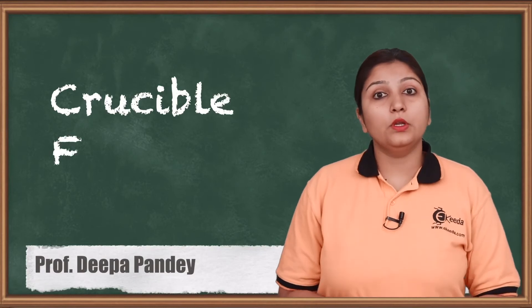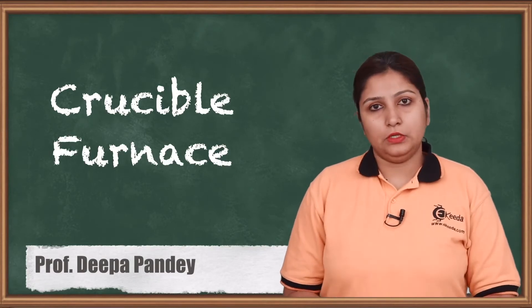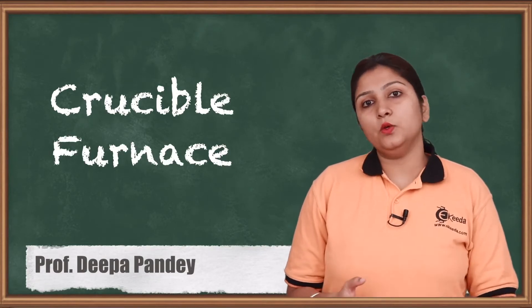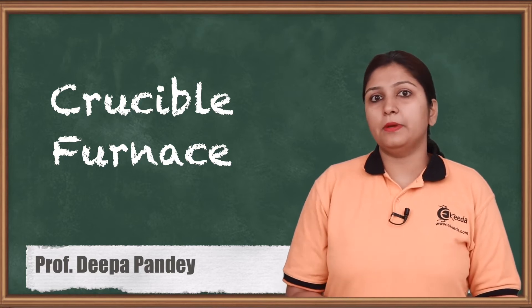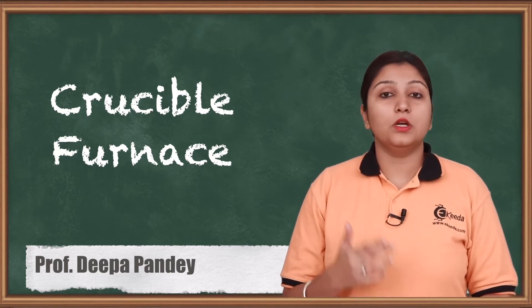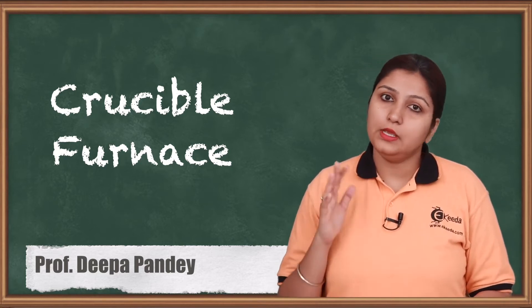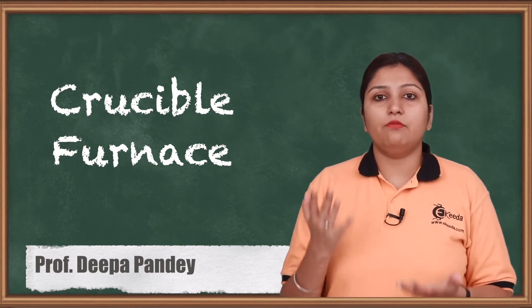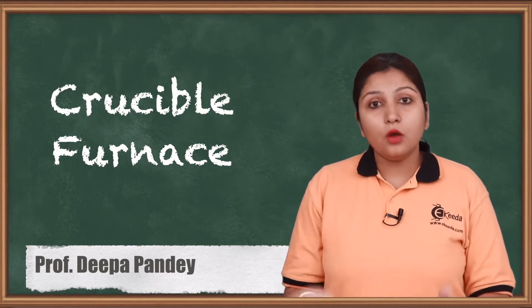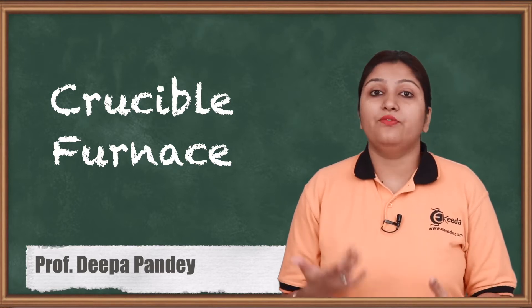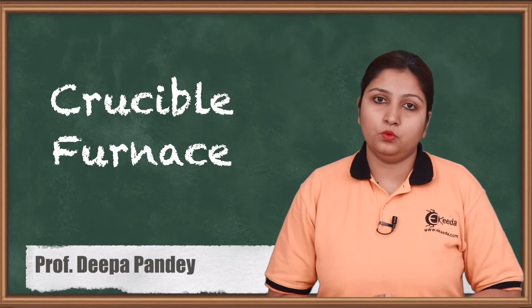Hello friends, what we are going to see today is a crucible furnace. It is used for melting of the metal, and the melted metal is used in our casting process. It solidifies and hence a final cast, or your final product, is being produced.